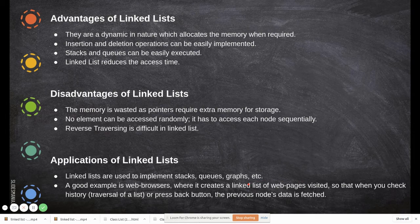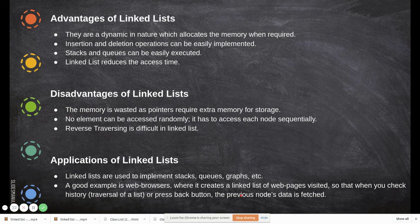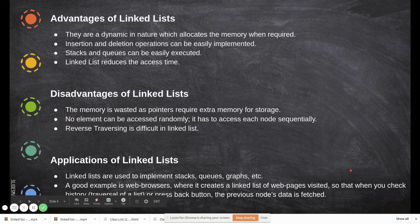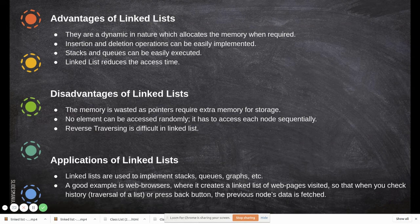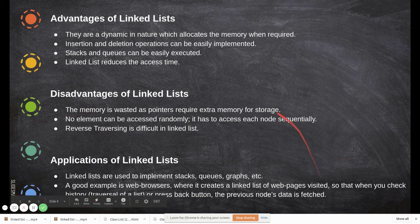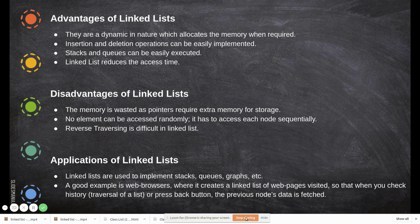In history all these things are stored, in what order you have seen, all those things will be stored in the history. Traversal of a list, or press back button to the previous node. Data is fixed. If you want to go to the previous, previous whatever website you have, you just press the previous button in the browser. You can go to the previous page, what you have seen. So this is a very good example of a real time linked list implementation.